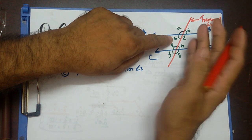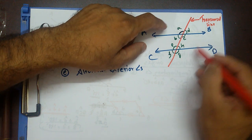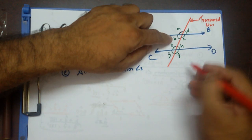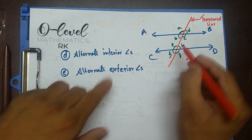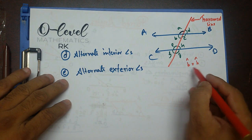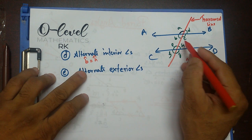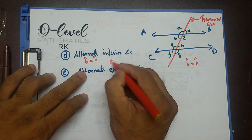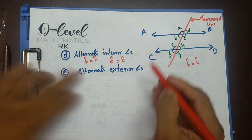B and H are alternately placed — they are on opposite sides of the transversal line, and both of them are inside the parallel lines. So angle B equals angle H. We call that alternate interior angles. Similarly, angle E equals angle C — they are also alternate interior angles.